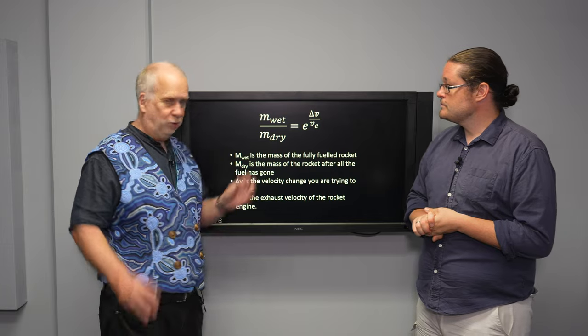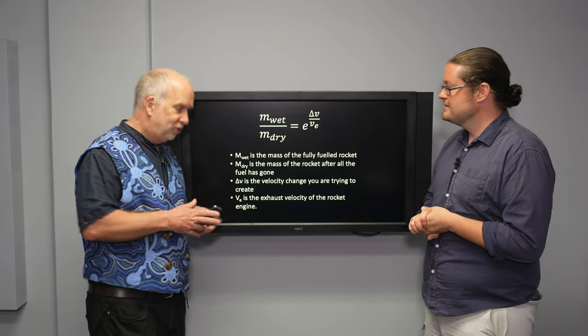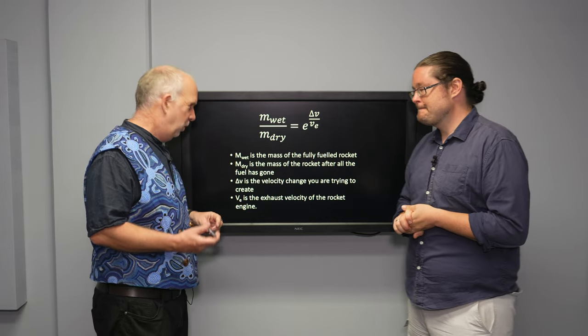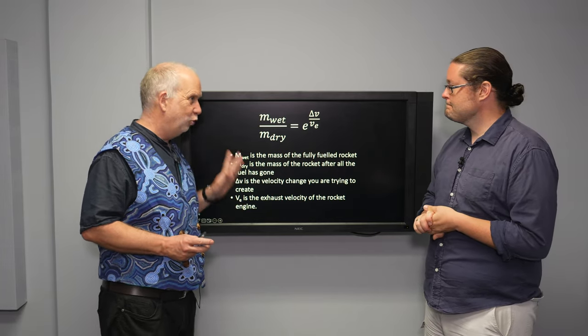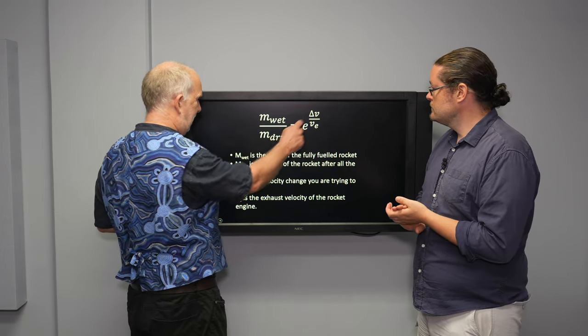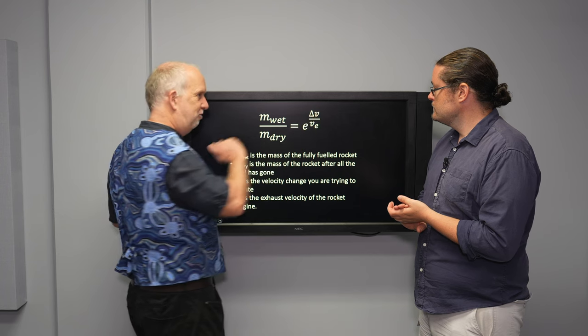And Tsiolkovsky worked out the rocket equation, the Tsiolkovsky rocket equation. So we're sorry to show you equations, but I think we have to have this one. But we'll explain slowly and carefully how it all works and how you use it. That's right. So what we've got here is four things. Wet mass, dry mass, delta V, and VE.